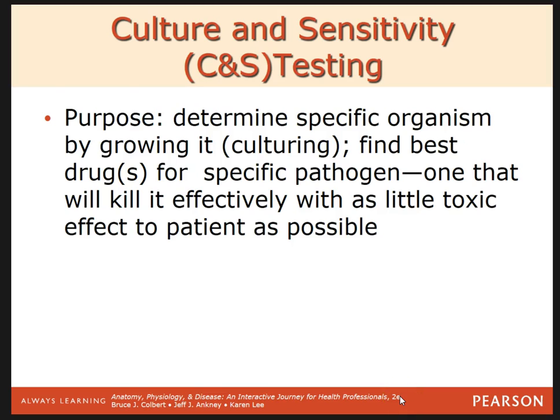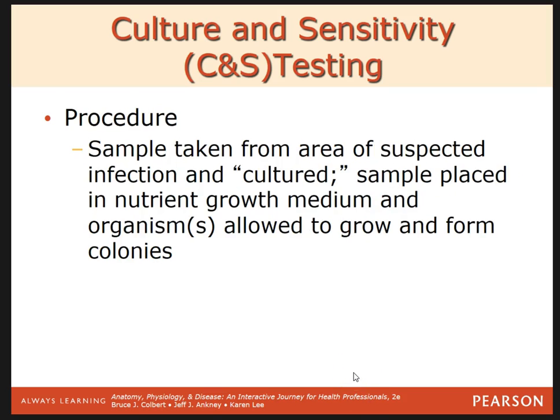The next topic is culture and sensitivity testing, or C&S testing. This is done when trying to identify the best medications to treat an infection — to determine the specific organism. We grow it on a culture, usually an agar plate, then place a dot of medication for specific pathogens next to it and see how effectively it will kill the pathogens, hopefully identifying something with as little toxic effect to the patient as possible. The procedure is to take a sample from an infection and have it cultured.